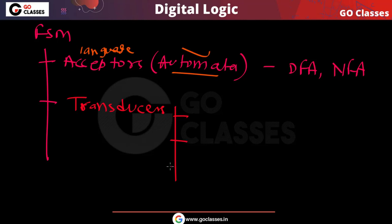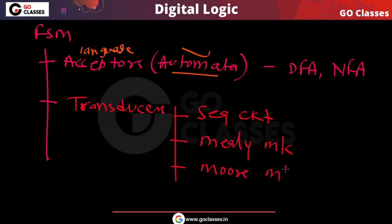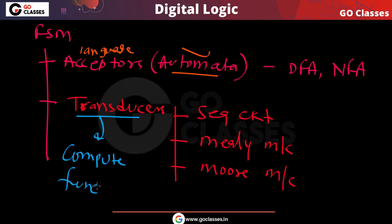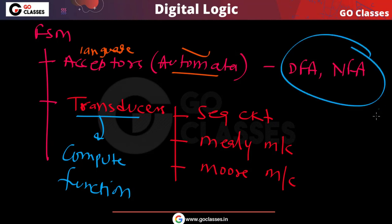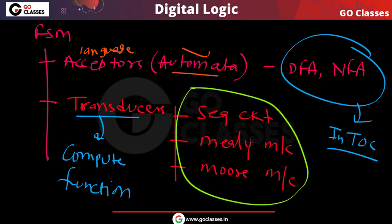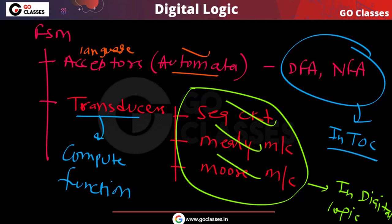The second type is transducers. We will study three types of transducers: sequential circuits, the Mealy machine, and the Moore machine. Transducers compute a function — the output of a DFA or NFA is yes or no, but the output of a transducer is some function. That is the key difference between automata and transducers. In theory of computation you study both types, but in digital logic we focus on transducers — these three finite state machines.